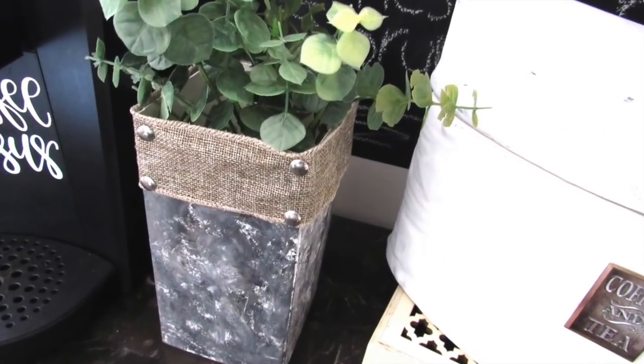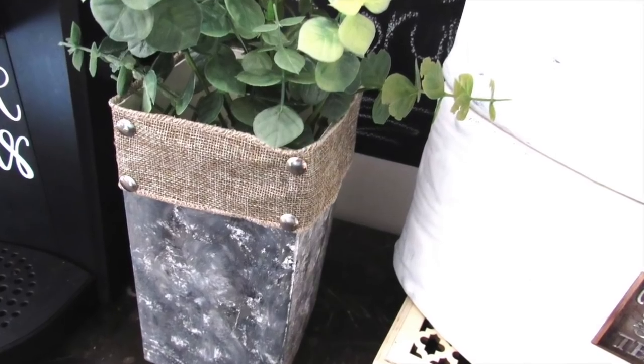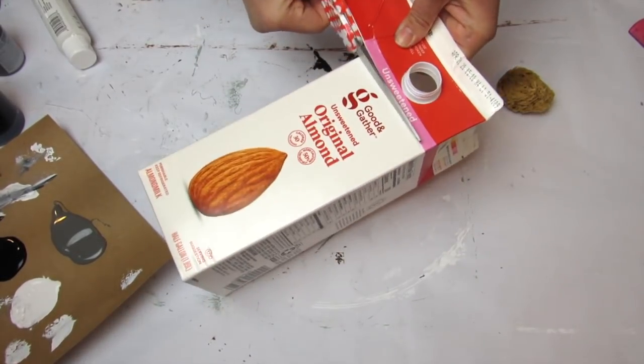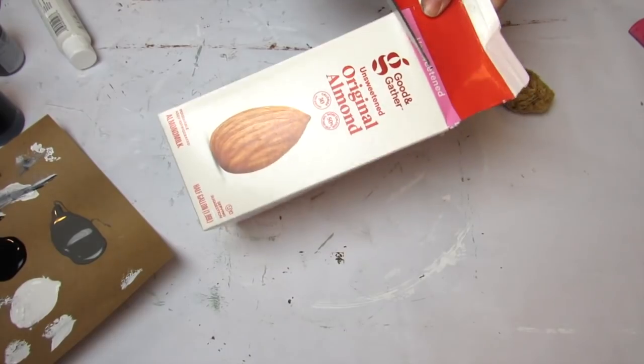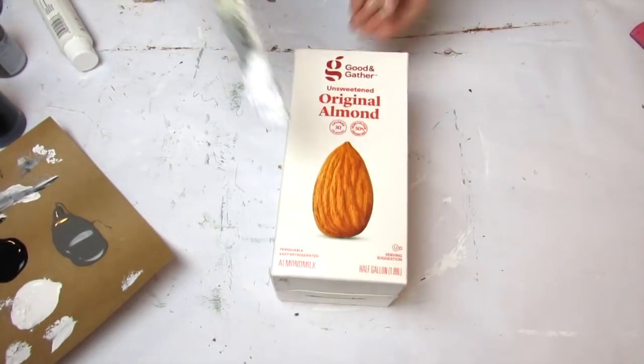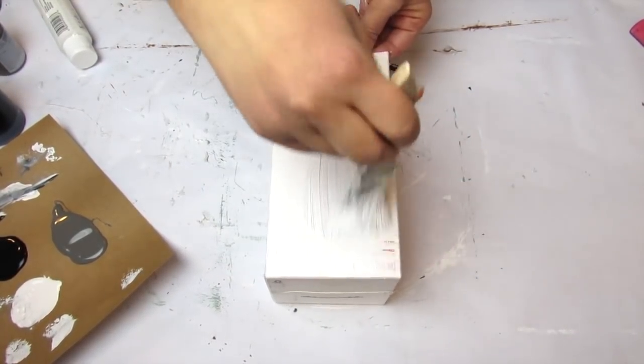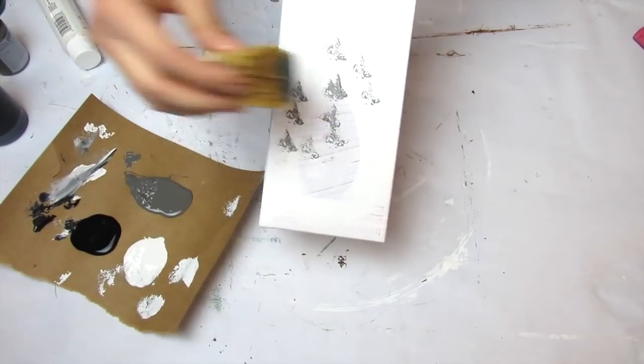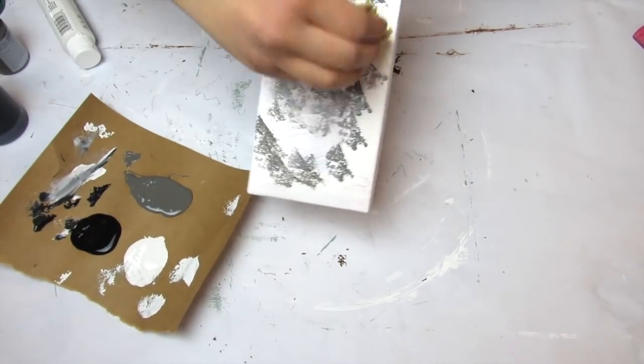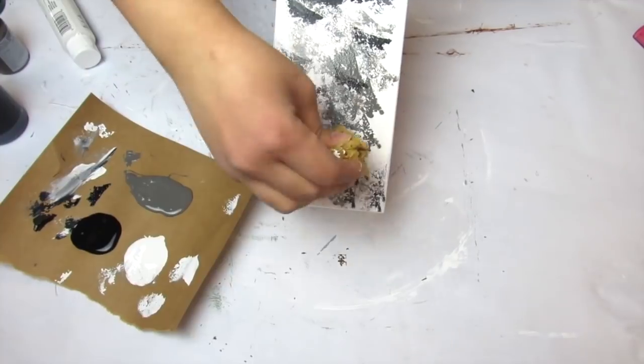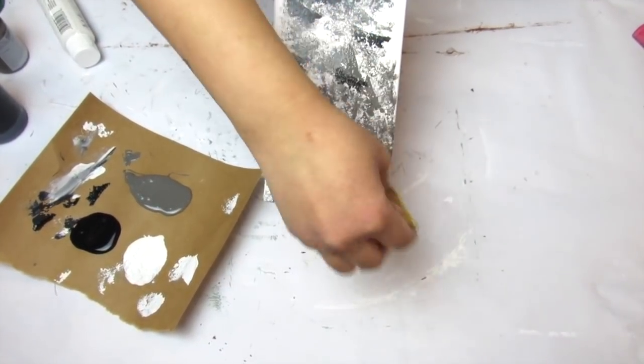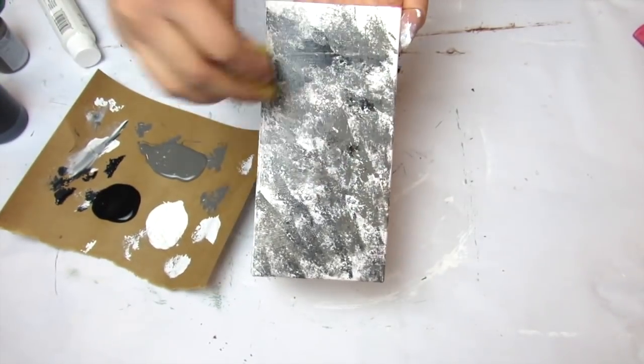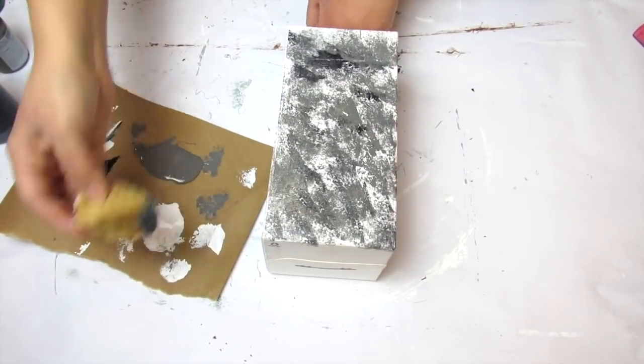In keeping with the galvanized theme, our next trash to treasure is going to be a galvanized faux vase. I'm taking this almond milk container and just cutting off the top of it. I'm going to use the same three paint colors, the same exact technique you saw me do. The only difference between this galvanized vase and the coffee container one is that I started with a white base. I just did one thin coat of the white chalk paint just so I had enough of it to cover the writing that was on the almond milk container.